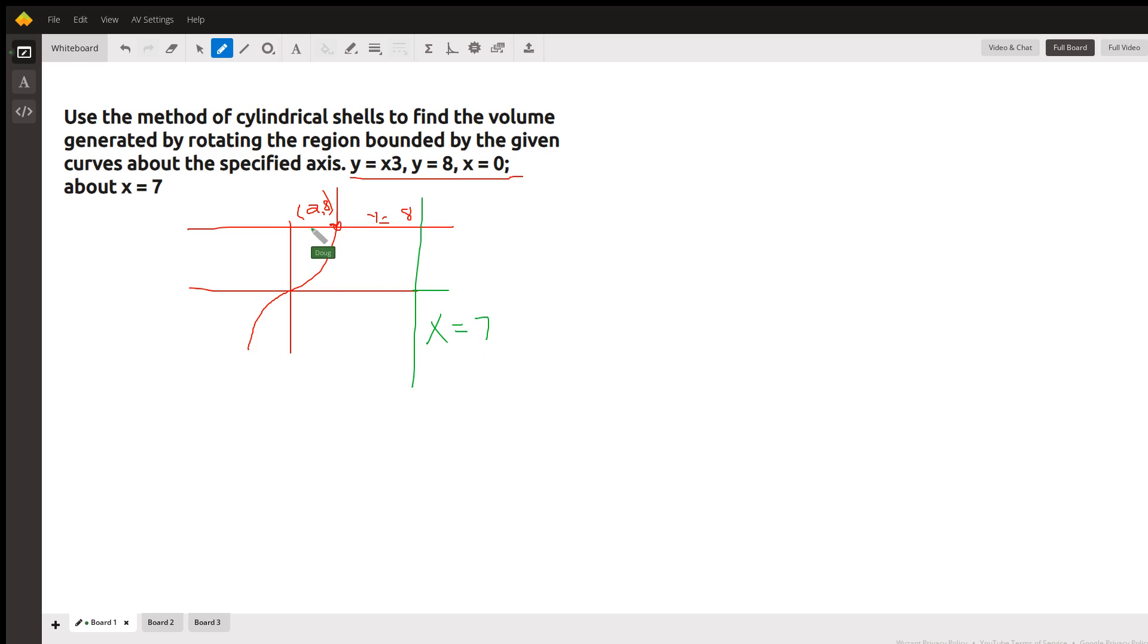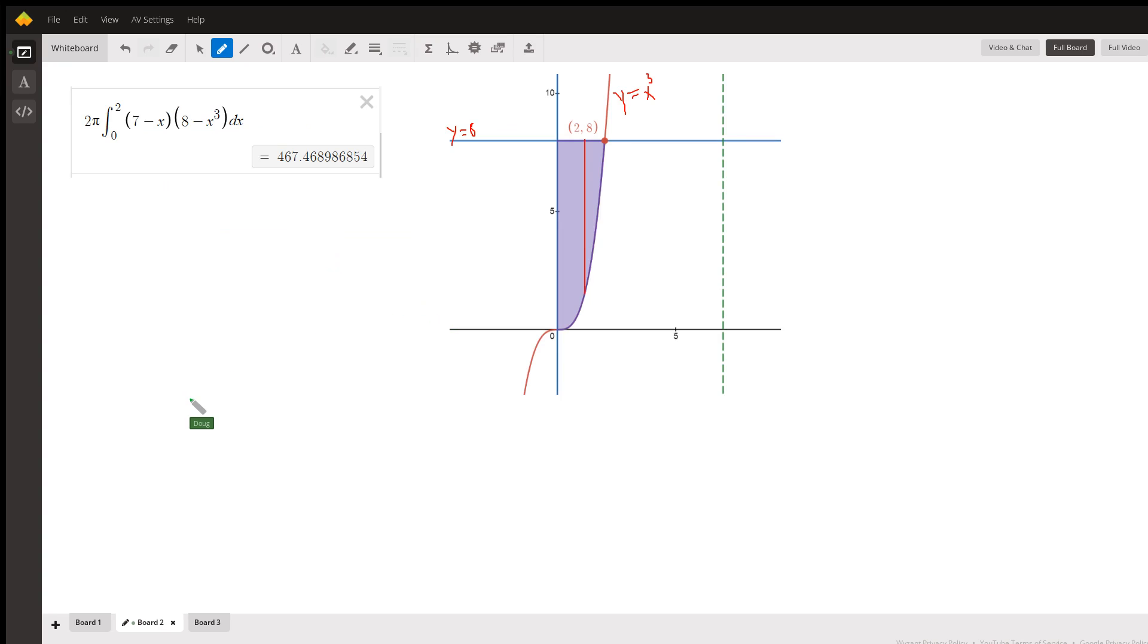And we're supposed to use cylindrical shells, so draw a typical shell right here. And here's what the formula looks like when you're using cylindrical shells: it's 2π times the definite integral, in this case from zero to two. We're integrating along the x-axis from zero to this two right here.